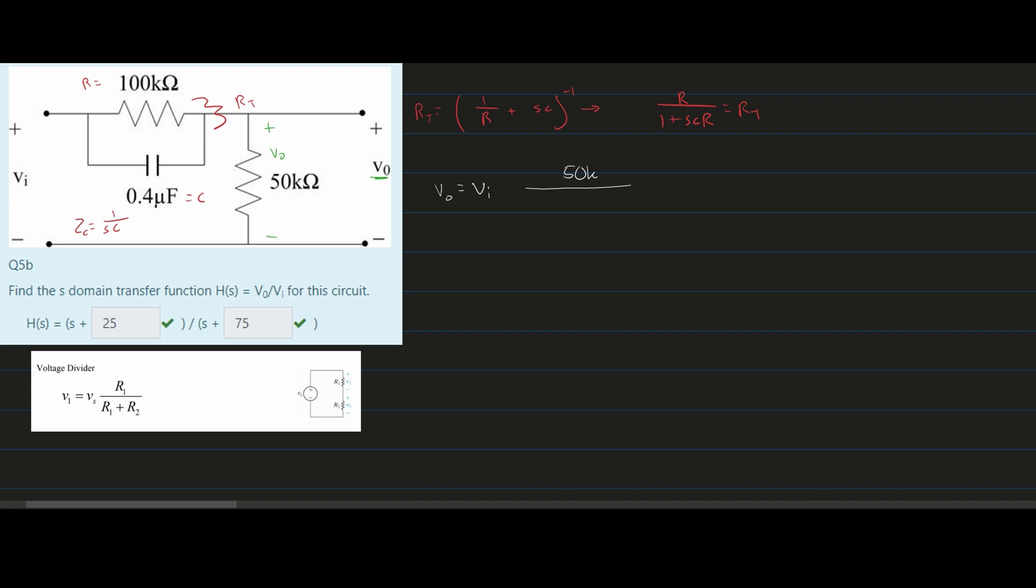We have R1 again down here, 50 kilohms, plus R2, which is R total. R total is R over 1 plus SCR. Now we need to get rid of this denominator. To do this, I'll multiply everything by 1 plus SCR over 1 plus SCR.